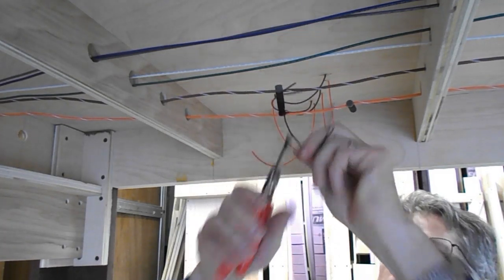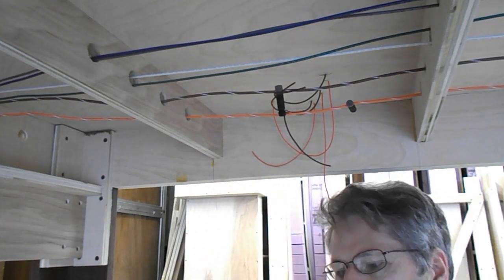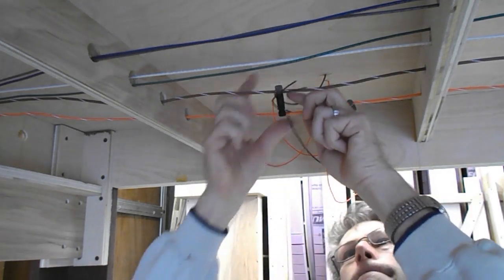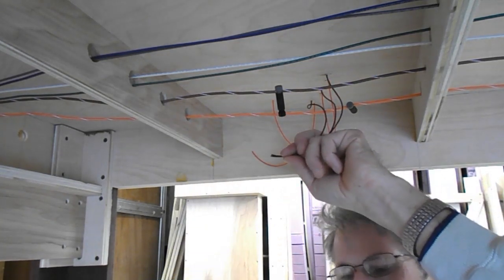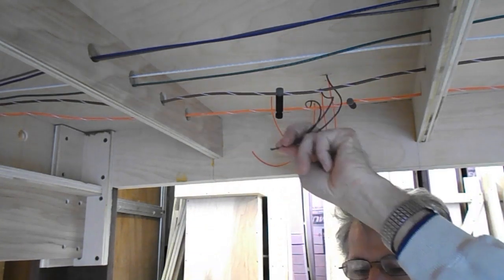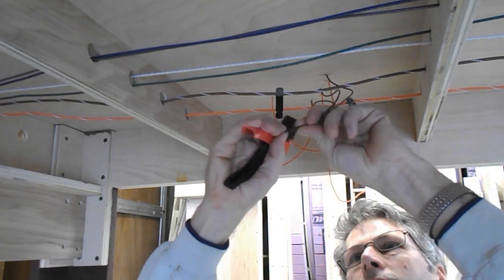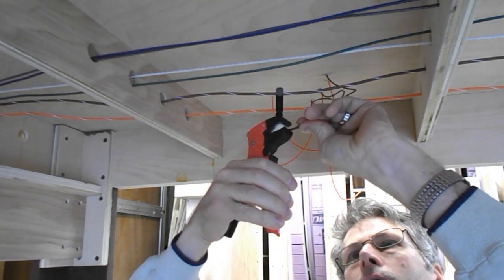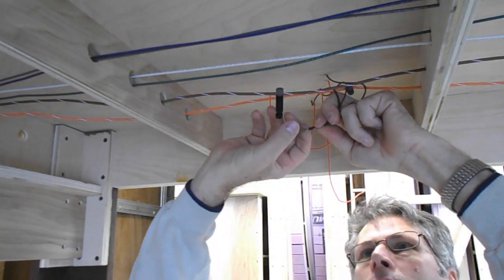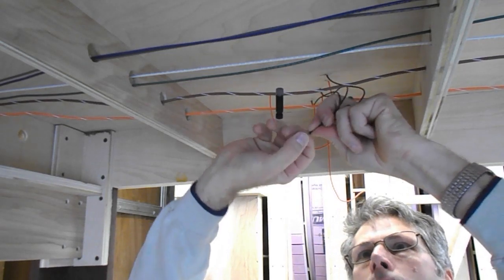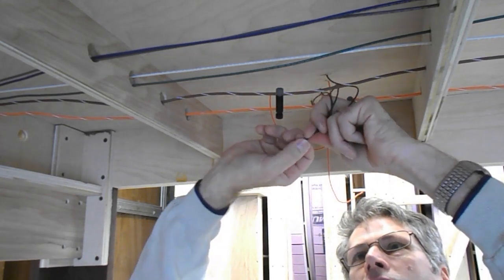Start by cutting them all to the right length. As you can see, I only cut about two or three inches off each one. So I start by baring the ends and now I twist them together so they make good mechanical contact.